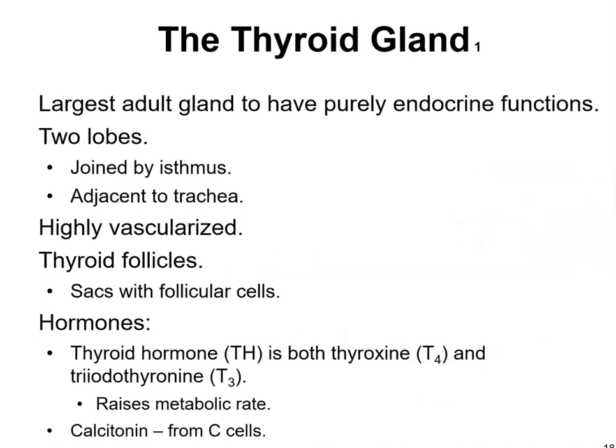The thyroid gland is the largest adult gland with purely endocrine functions. It has two lobes joined by an isthmus, is adjacent to the trachea, and is highly vascularized. It contains thyroid follicles with follicular cells. Hormones produced include thyroxine (T4) and triiodothyronine (T3), which raise metabolic rate, and calcitonin, formed from C-cells.